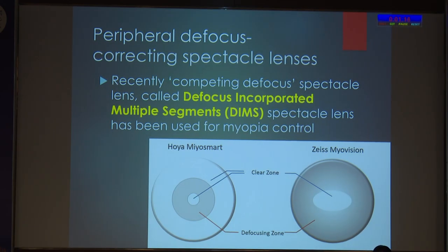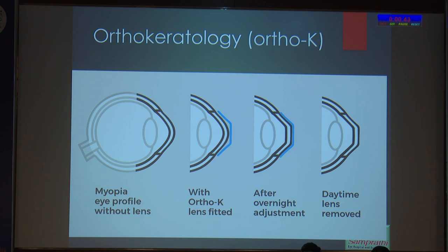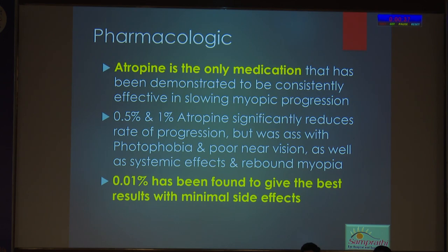There has been a lot of interest about DIMS lenses — defocus incorporated multiple segments. The central clear zone gives good visual acuity; around that there is a hyperopic zone. Based on the peripheral defocus theory, central rays focus on the retina when you correct myopia, but the peripheral rays focus behind the retina, inducing hypermetropia and thereby resulting in progression of myopia. Ortho-K lenses have also been used. Atropine has been the most promising — 0.01% gives the best results with minimal side effects. Atropine works not through the accommodative mechanism but through a non-muscarinic direct influence on scleral fibroblasts.